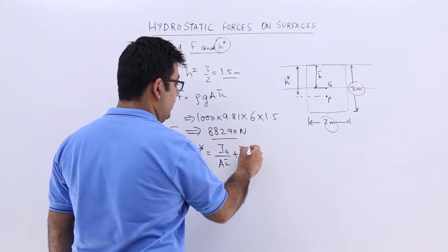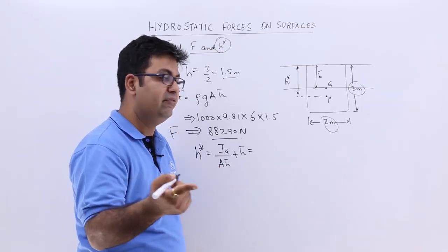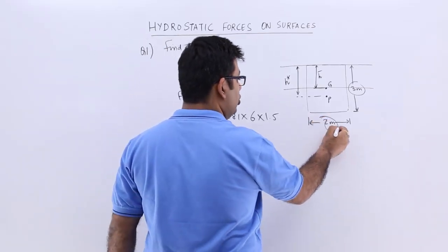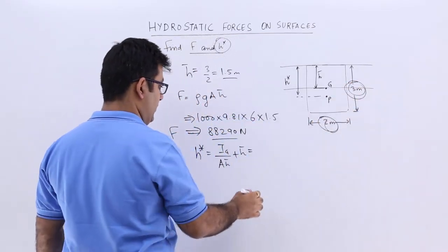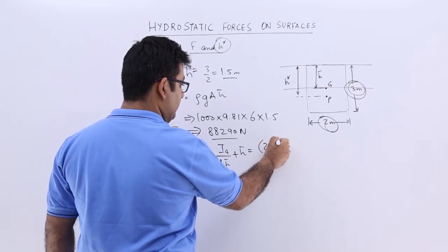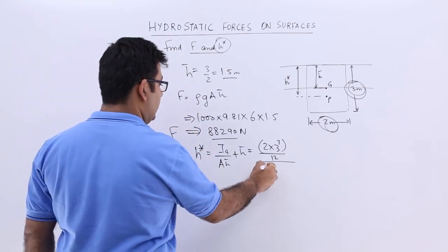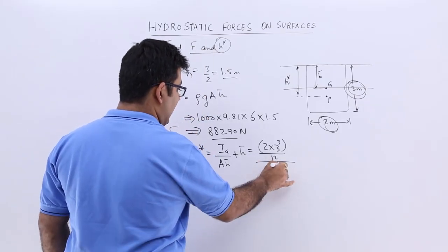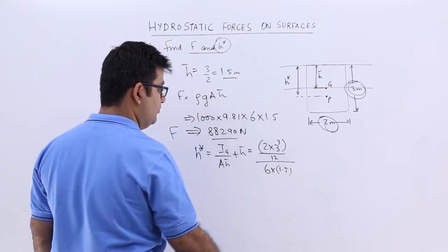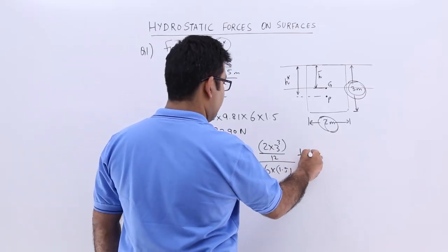So that is for a rectangle bd³ by 12. So in this b would be 2, d would be 3.